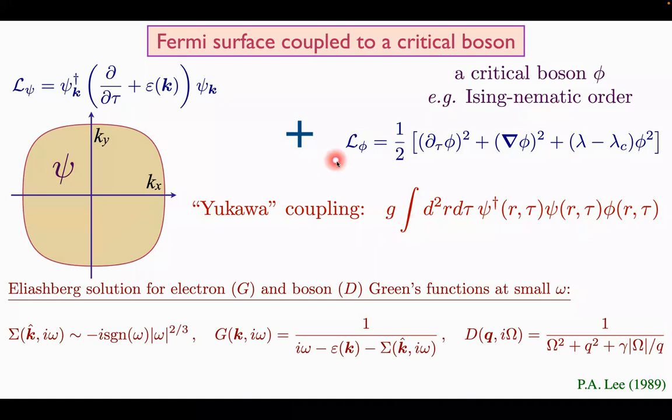Okay, so now this particular critical point has been studied in some detail over the last two decades. So you take a Fermi surface of fermion psi, coupled to some critical bosonic order parameter, with a Yukawa coupling G. And I think the earliest person to notice that a model like this leads to a breakdown of quasiparticles is Patrick Lee, where he showed that the self-energy had this very small power of omega, omega to the two-thirds. And this led to a very short particle lifetime, in fact, shorter than its energy. So the idea of a quasiparticle broke down. The boson propagator D has this Landau damping form, which is crucial to this two-thirds exponent.